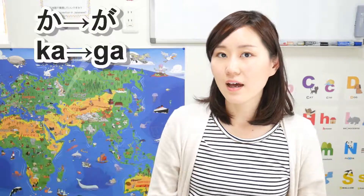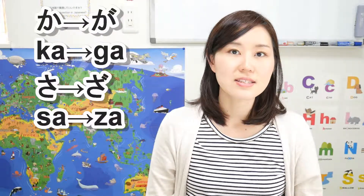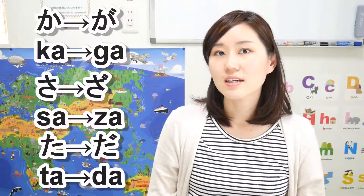So far we have learned that ka becomes ga, sa becomes za, and ta becomes da. Now we're gonna continue with that.